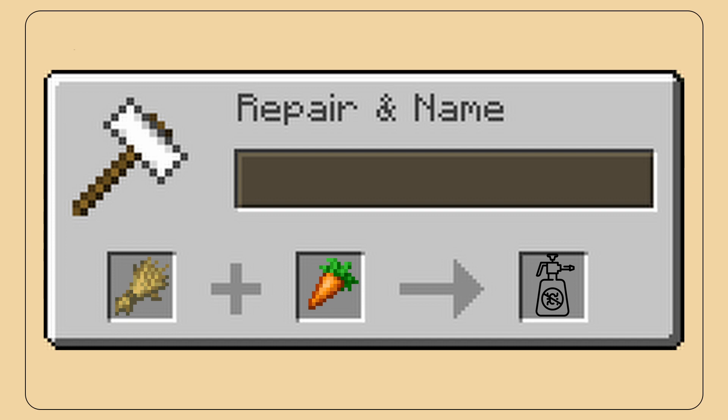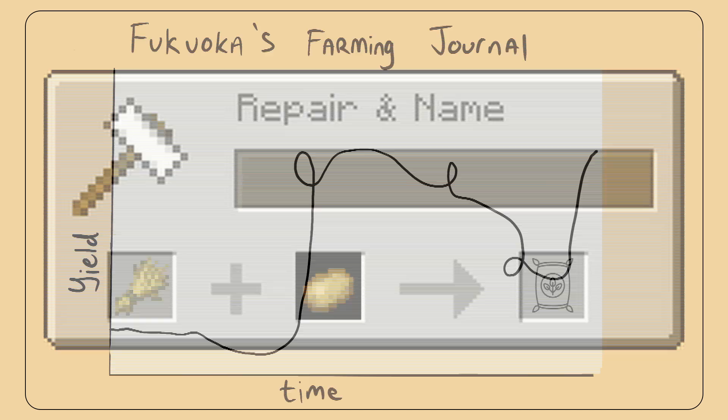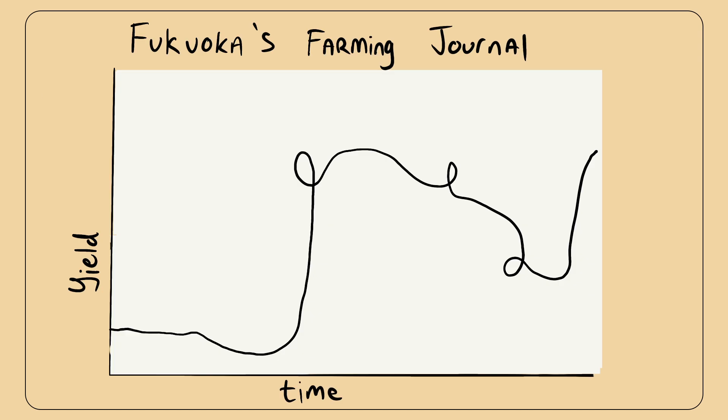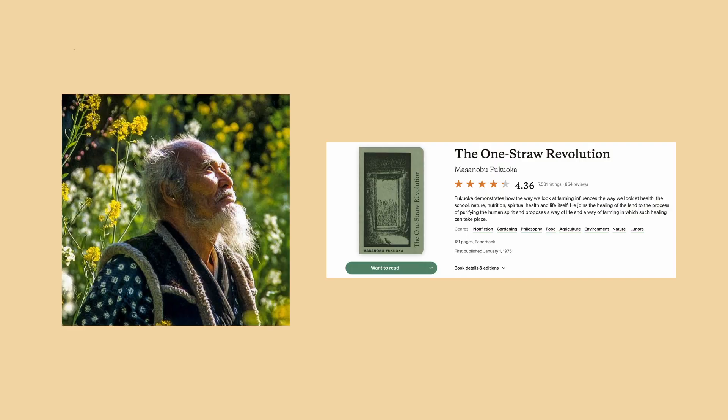By seeing that certain combinations of crops would control pests naturally and others would improve soil fertility, he would implement small changes and record the results to see how they would affect the yield and the ecosystem of the farm. He wrote about his journey and his improved crop yield in the book The One Straw Revolution.